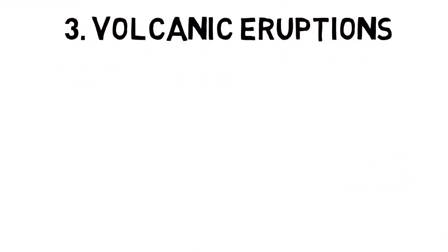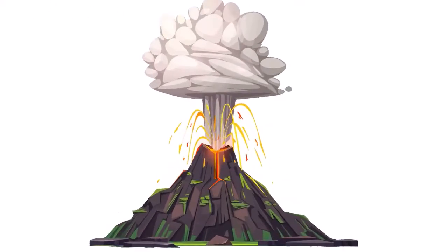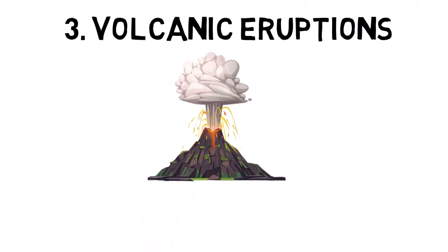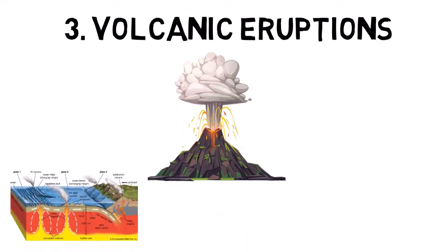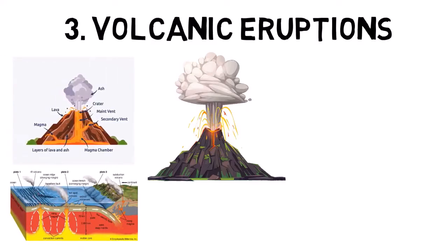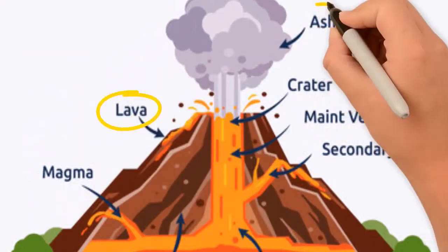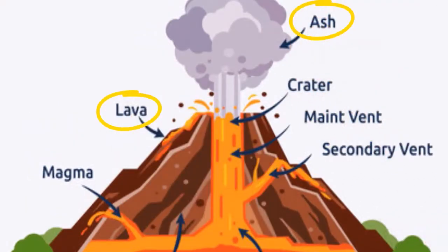Volcanic eruptions occur when molten rock, ash, and gases escape from a volcano. This can happen due to the movement of tectonic plates or the buildup of pressure within the Earth's crust. Volcanic eruptions can vary in intensity, from relatively mild lava flows to explosive eruptions that send ash and gases high into the atmosphere.